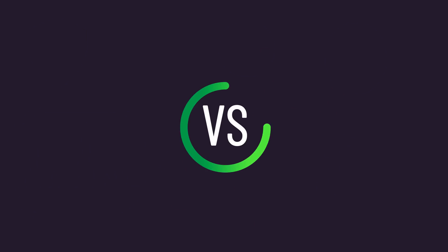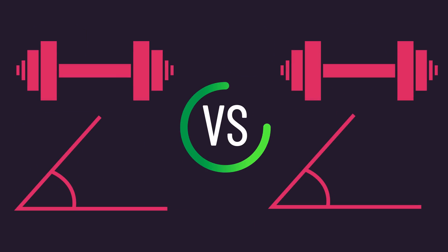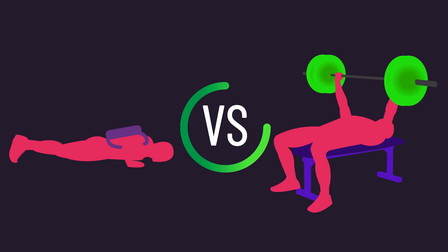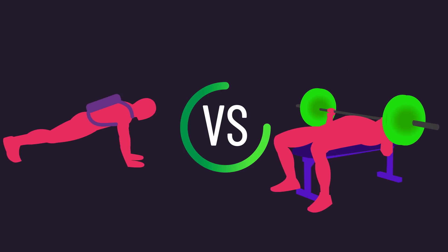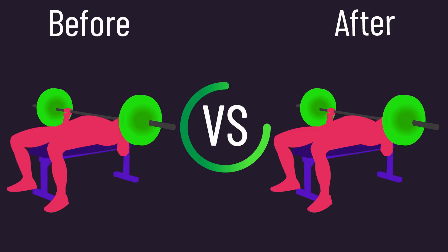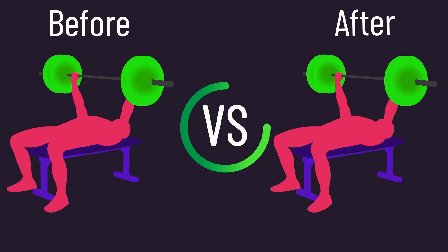Comparing EMG recordings between two exercises involving similar relative loading and angles might not be that bad. For example, comparing equivalently loaded weighted push-ups to bench presses with a similar range of motion may be an alright comparison with EMG. Comparing EMG recordings before and after a training program in the same person may also be an alright thing to do.